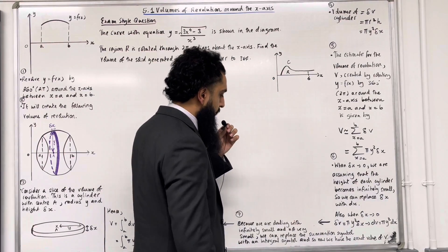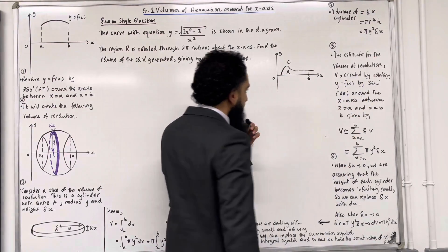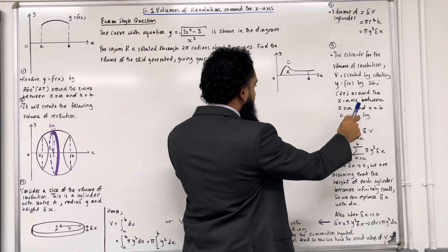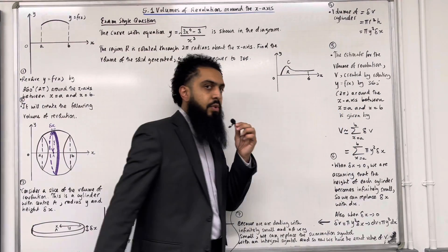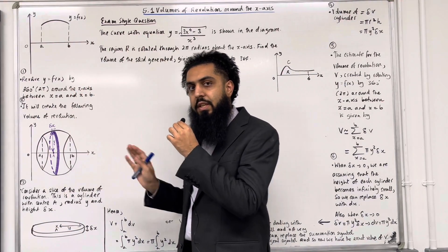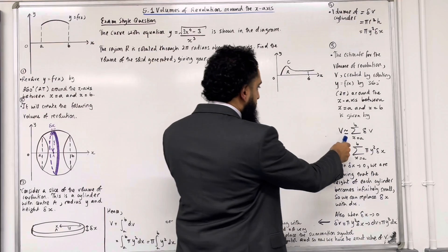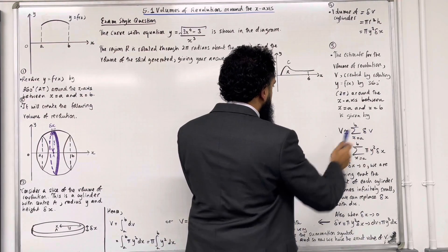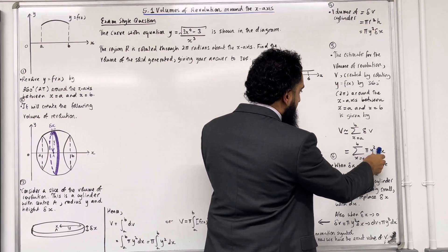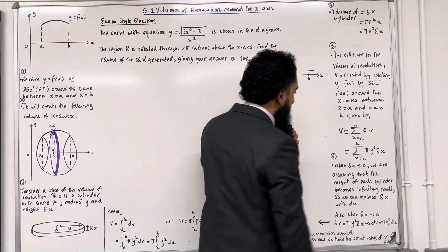Moving on to step number 5. The estimate for the volume of revolution v, created by rotating y equals f of x by 360 degrees (2 pi radians) around the x-axis between x equals a and x equals b, is given by the summation from x equals a to x equals b of delta v. Since the volume of each small cylinder is pi y squared delta x, this summation can be written as the sum from x equals a to x equals b of pi y squared delta x.